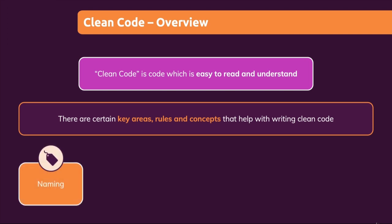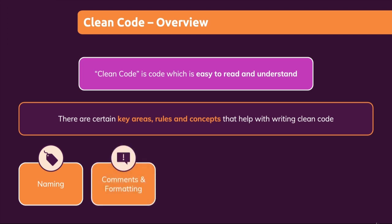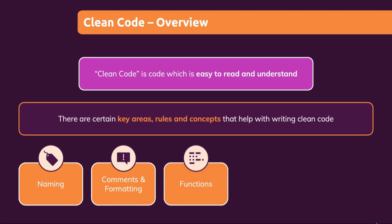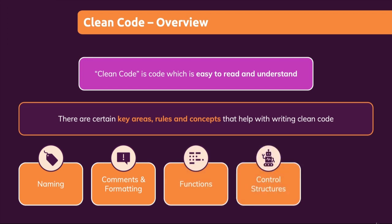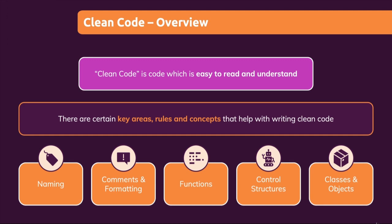The key areas include the naming of things — naming of variables and functions and classes and so on — comments and formatting, functions, working with control structures correctly, and working with classes and objects correctly. These are the areas we covered in this course. Now let's take a closer look again at all these areas and let me summarize what matters for these specific areas and which general rules you should follow.